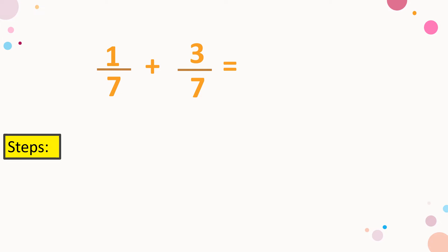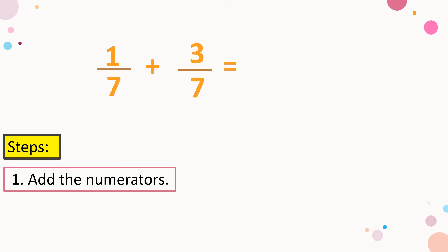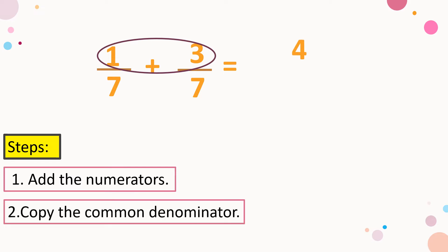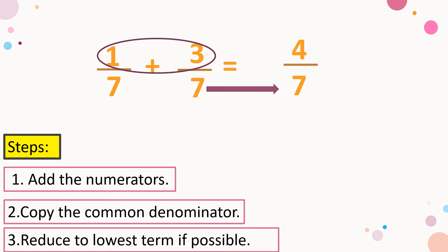Steps on how to add similar fractions. Number one, add the numerators. So we have one plus three, that is equal to four. Next, copy the denominator or the common denominator, which is seven. So divided by or over seven. And then, reduce to lowest term if possible. But four over seven is already in lowest term. Therefore, that's the final answer.